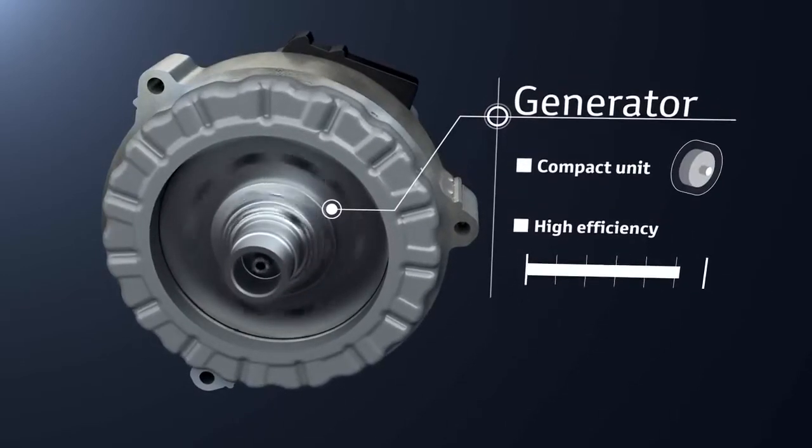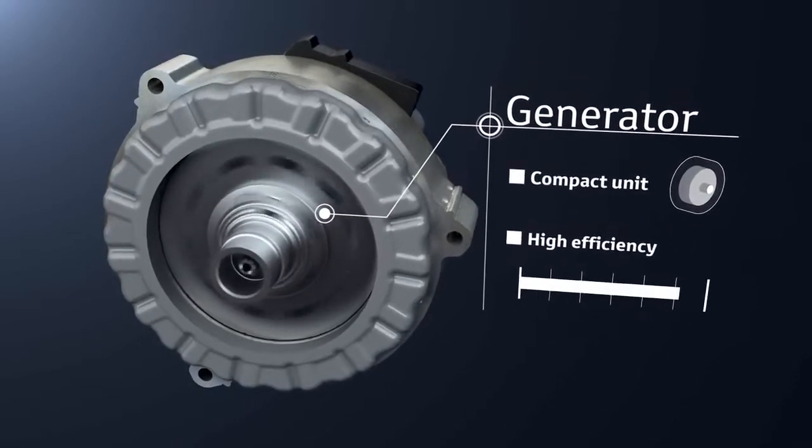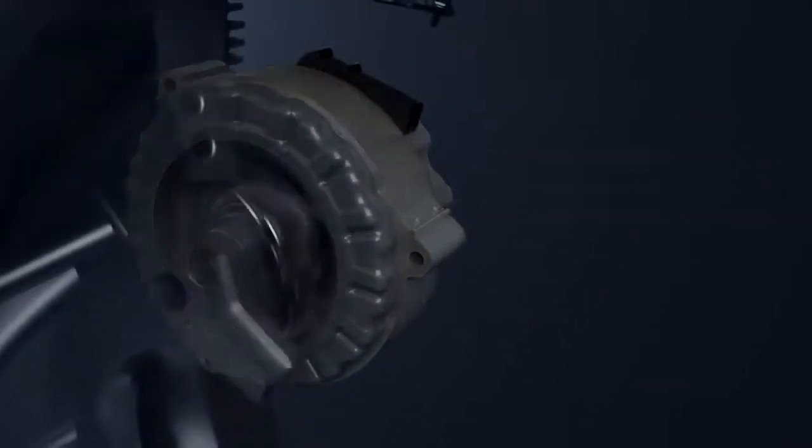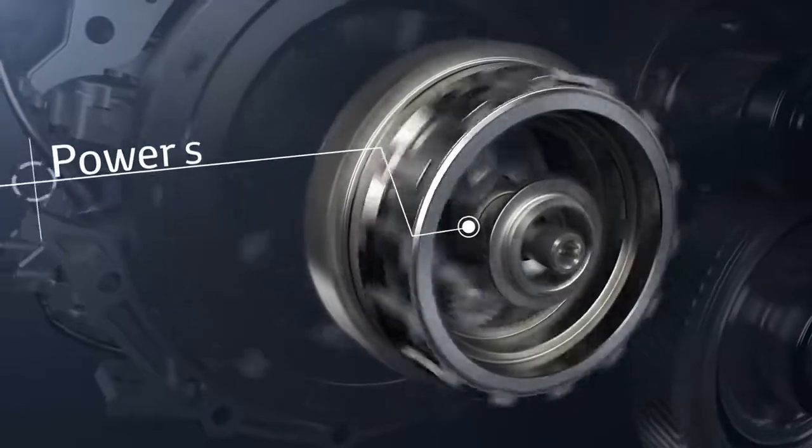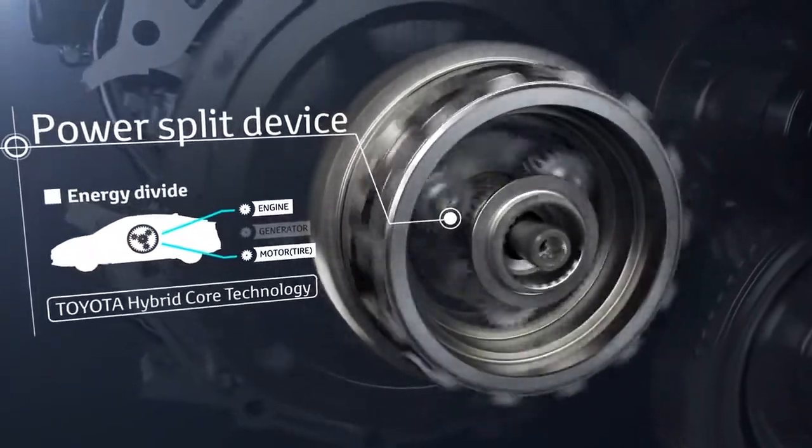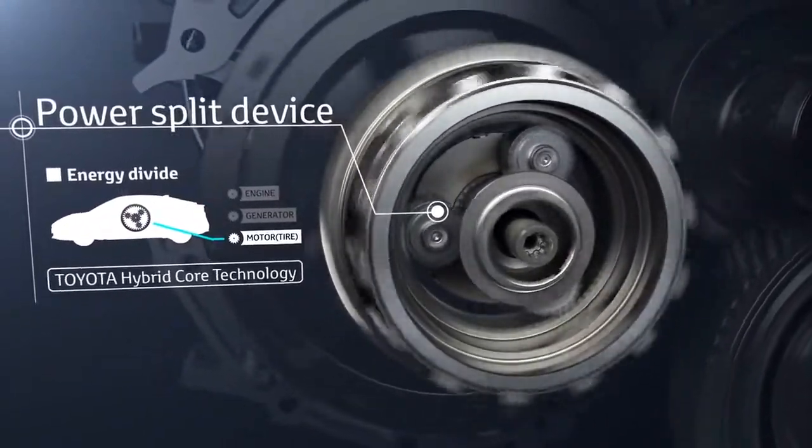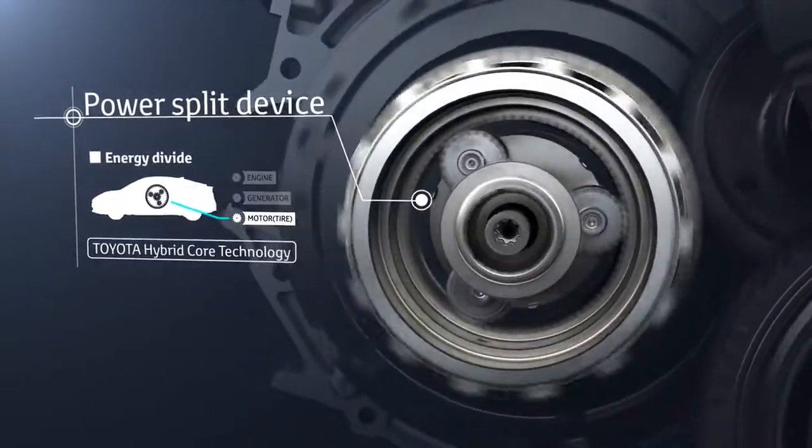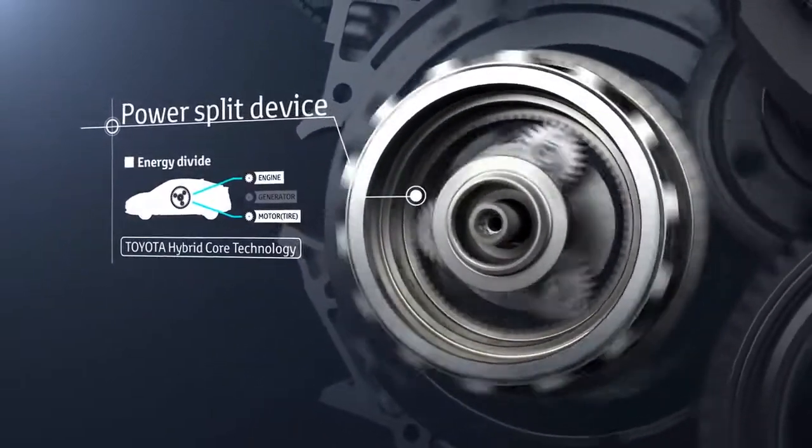It is also used as the engine starter, providing smooth engine starting. The power split device contained in the transaxle is Toyota's hybrid core technology that divides the engine's energy output between electrical generation and driving according to driving conditions.